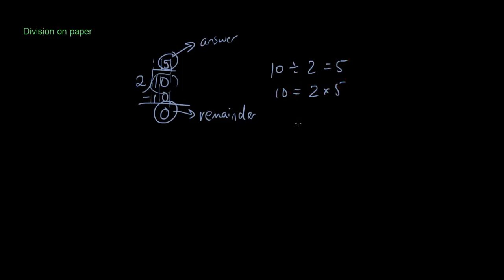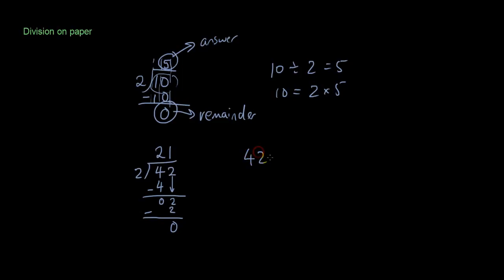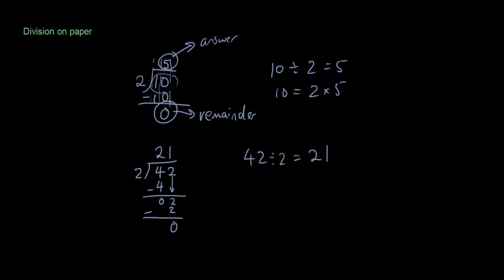That represents 10 divided by 2 equals 5, or you can say 10 equals 2 times 5. Let's try another one: divide 42 by 2. Looking at the first column on the left, 2 times 2 is 4, and 4 minus 4 is nothing. Now bring down the second column: 2 times 1 is 2, and 2 minus 2 is 0. So 42 divided by 2 equals 21.